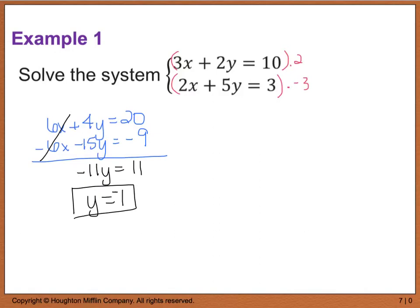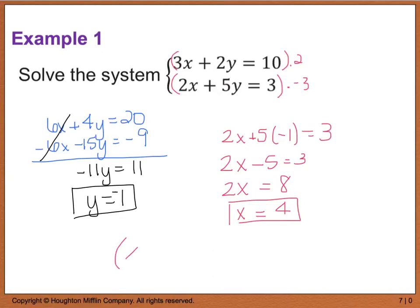Now I'm going to back substitute, or plug that in to one of the equations - I'll pick the bottom one. So then I have 2x plus 5 times a negative 1 equals 3, which gives me 2x minus 5 equals 3, or 2x equals 8, which means x equals 4. I've now solved for both x and y, and I do want to see you write your solution as a coordinate point. My coordinate point is going to be 4, negative 1, and this here would be my final solution.